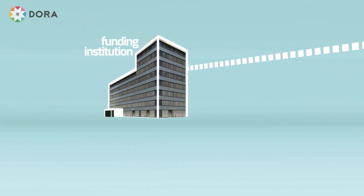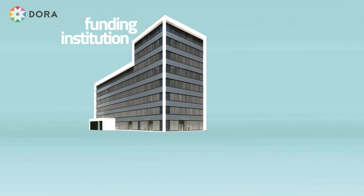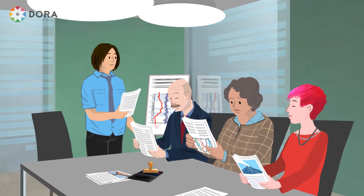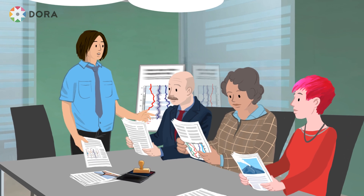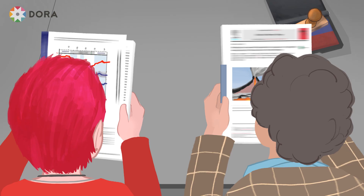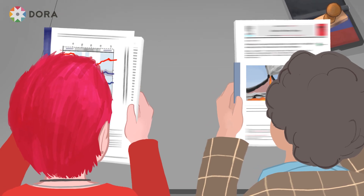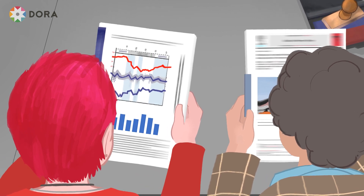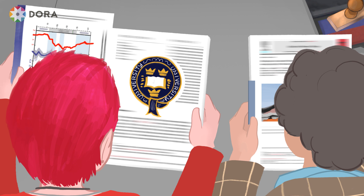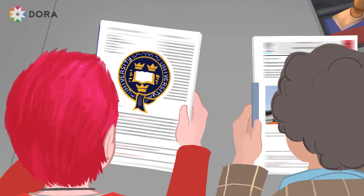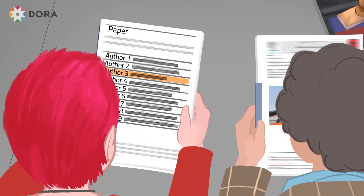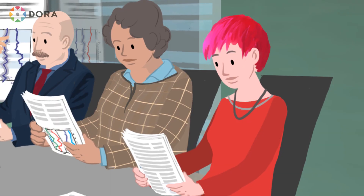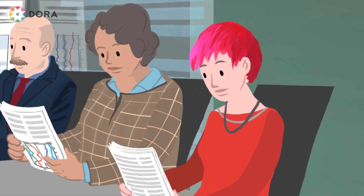We know that peer review is complex and subjective, so funders work hard to promote a fair process while minimizing the burden on applicants and evaluators. Focusing on shorthand or quantitative criteria such as journal-based metrics, H-index, university rankings, author list position in a publication, and the reputation of a researcher's institution is a familiar but problematic practice in research evaluation.